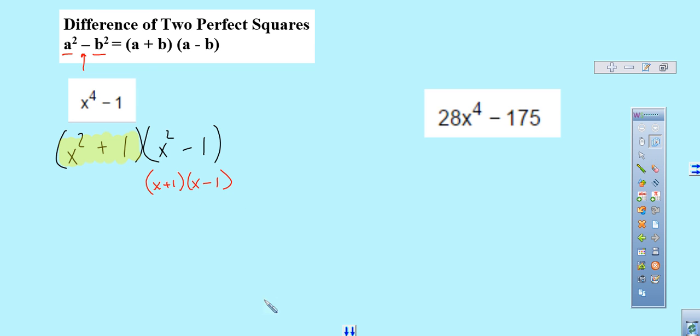So, my final solution for this guy would be x squared plus one times x plus one, x minus one. And I know that's a little bit more there, but like I said, this will be something that we'll be utilizing later on in the class.